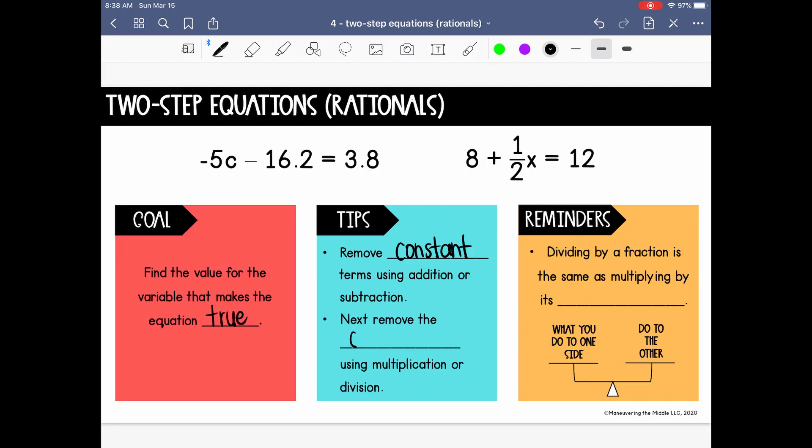Next, you'll remove the coefficient using multiplication or division. Now, since we're going to be working with rational numbers, including fractions and decimals, I want to remind us that dividing by a fraction is the same as multiplying by its reciprocal. And we'll talk about that more in our first example. And just keep in mind what you do to one side, always do to the other to keep things balanced and equal.